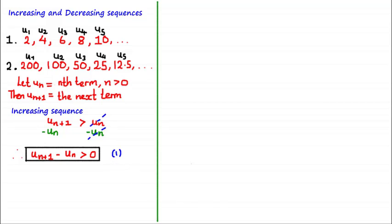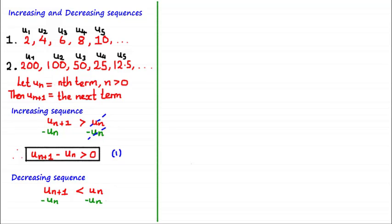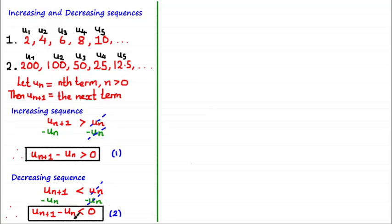We can also algebraically define a decreasing sequence: a sequence is decreasing if the next term u sub n plus 1 is less than the previous term for all values of n. Rearranging by subtracting u sub n from both sides, a sequence is decreasing if the difference between the next term and the previous term — u sub n plus 1 minus u sub n — is less than 0.